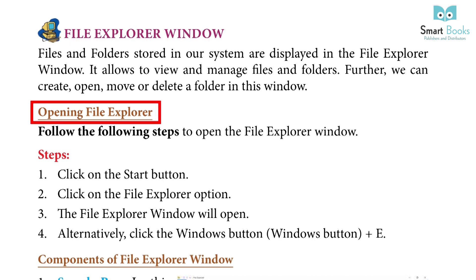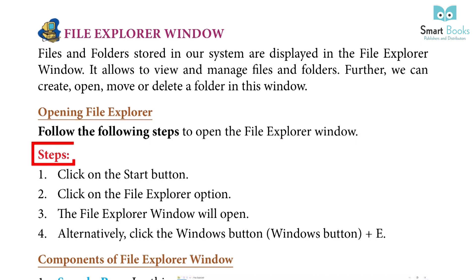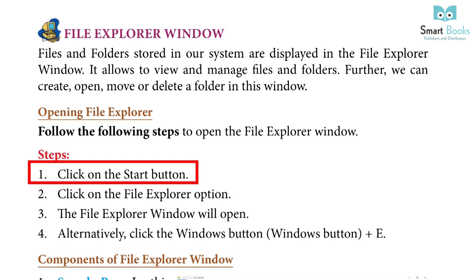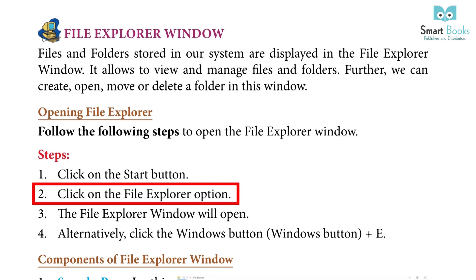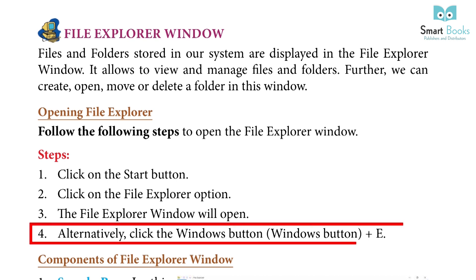Opening File Explorer: Follow the following steps to open a File Explorer window. Step 1: Click on the Start button. Step 2: Click on the File Explorer option. Step 3: The File Explorer window will open. Alternatively, click the Windows button plus E.